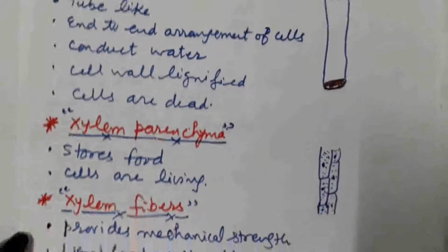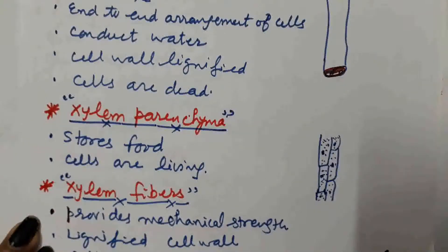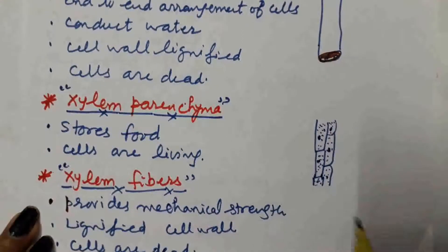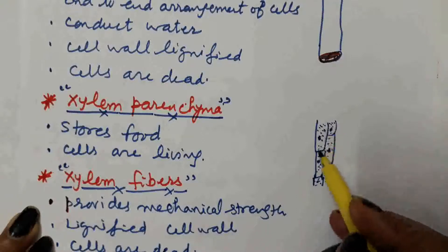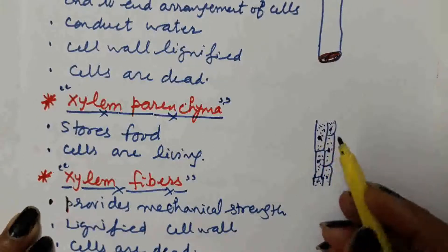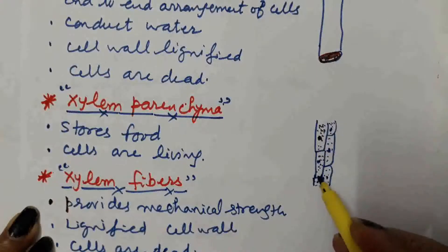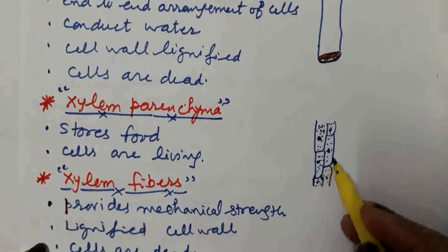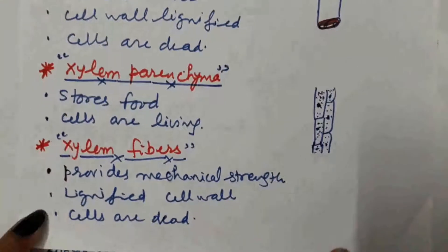The third type of cells in xylem is xylem parenchyma. Parenchyma cells are living. The cells are thin-walled, normal cells. In the center, the nucleus is present surrounded by cytoplasm. Their main function is the storage of food material. These are living cells.